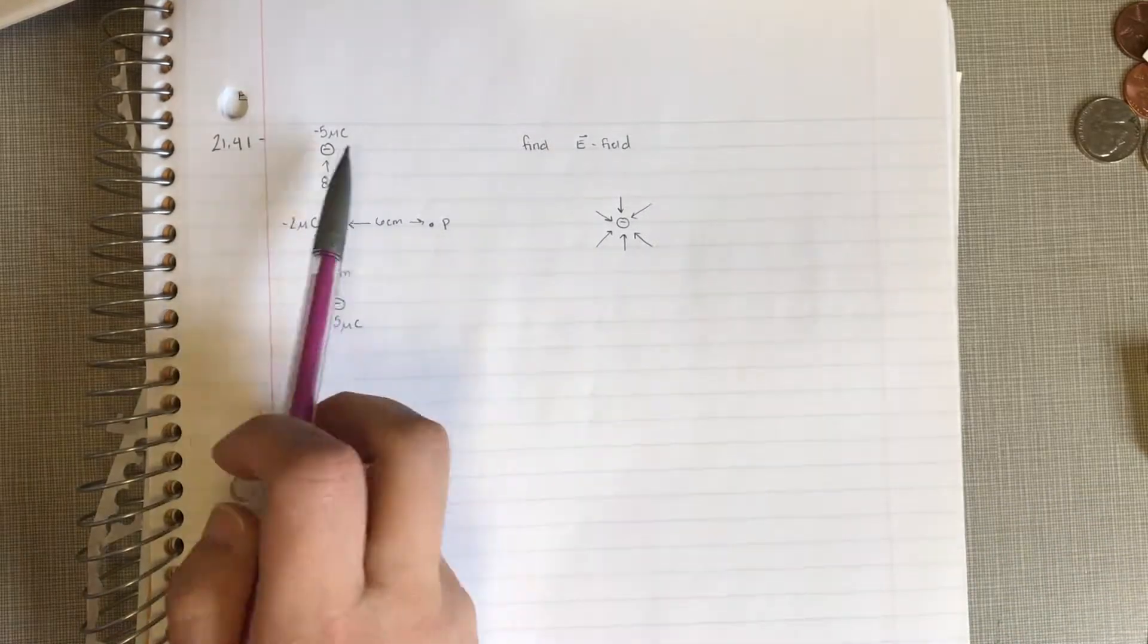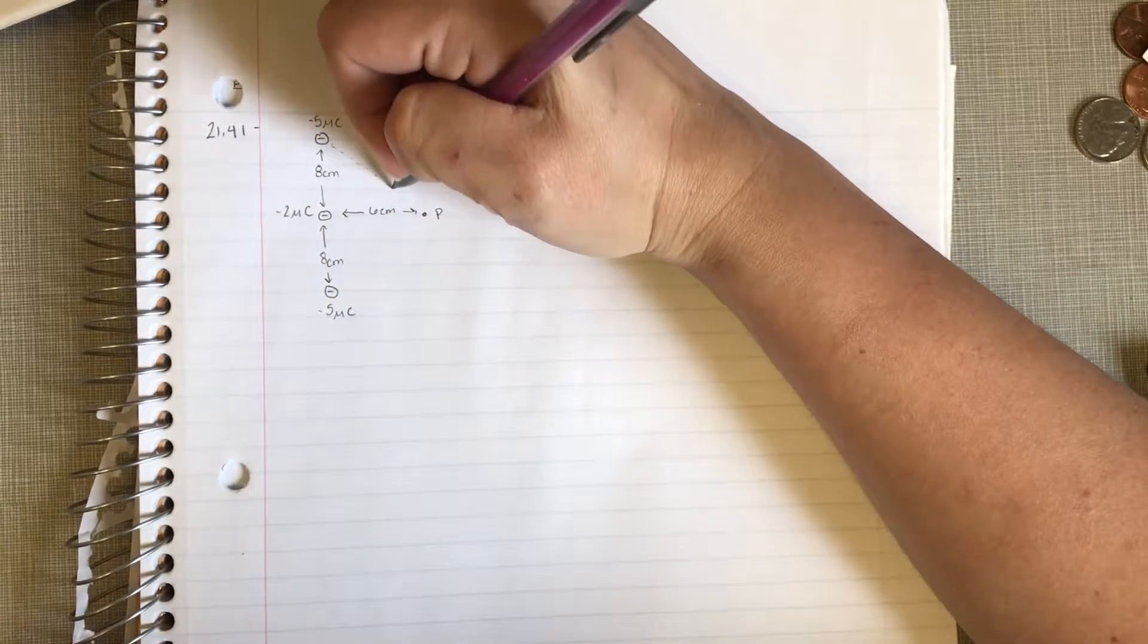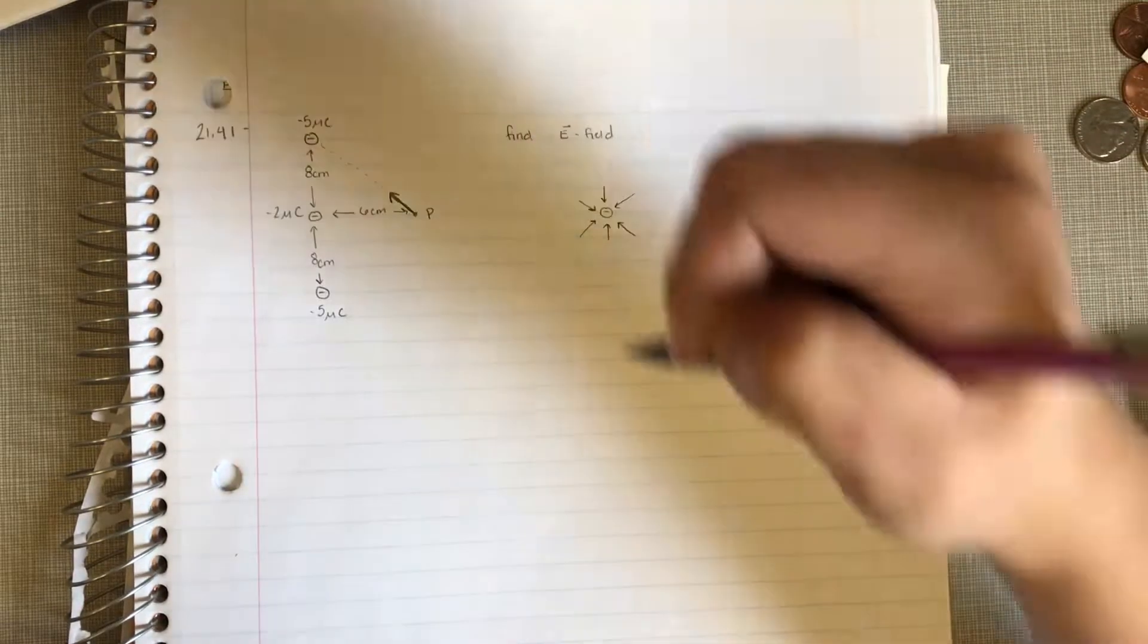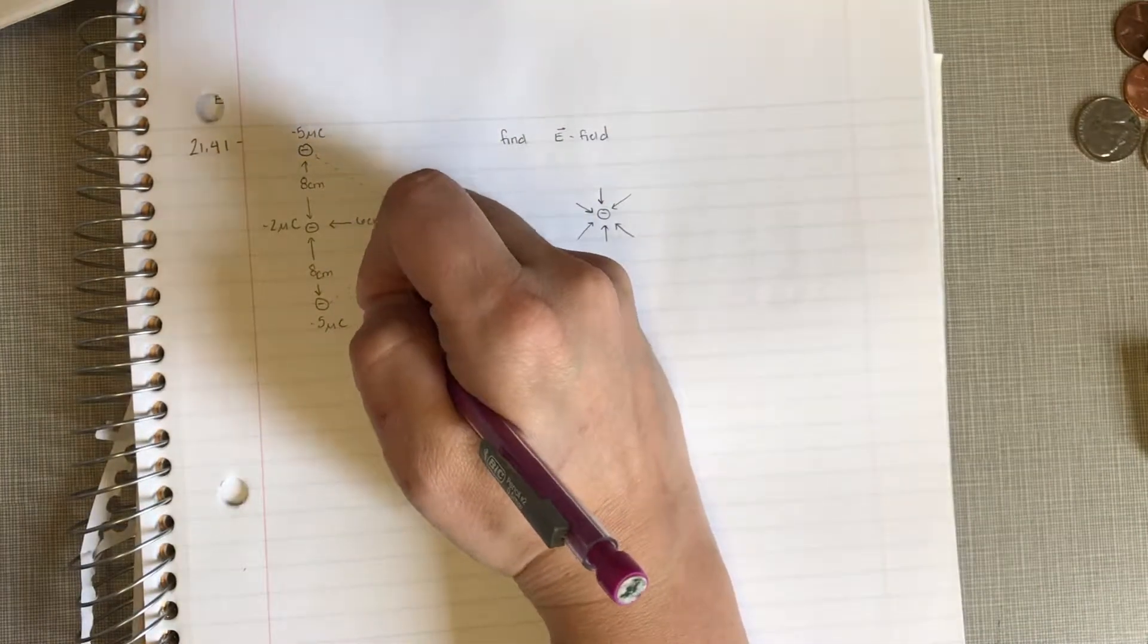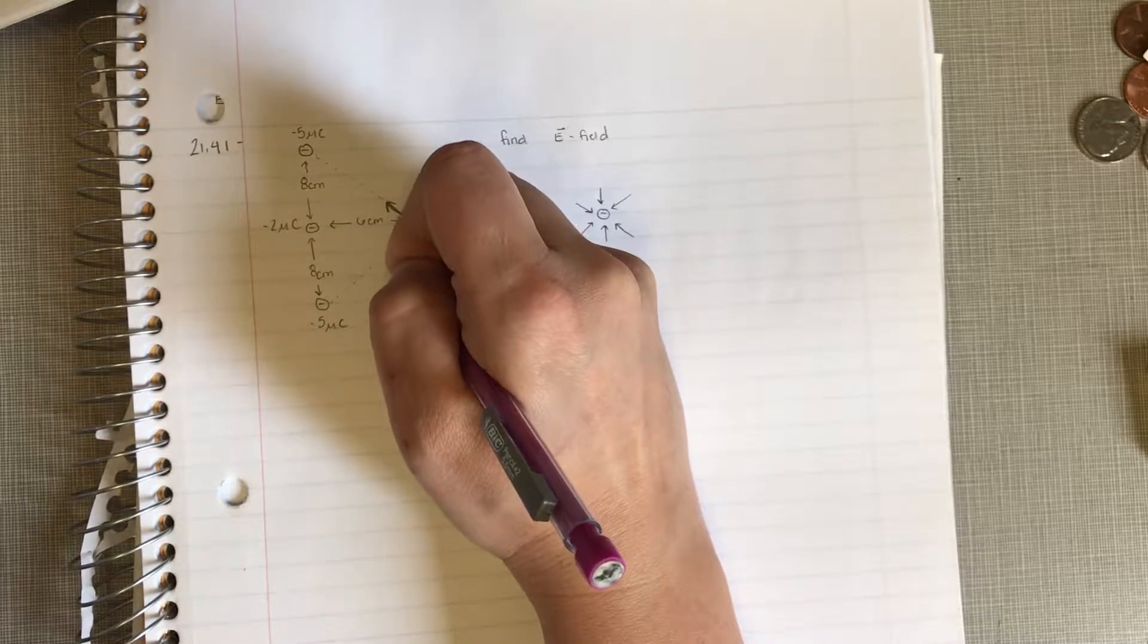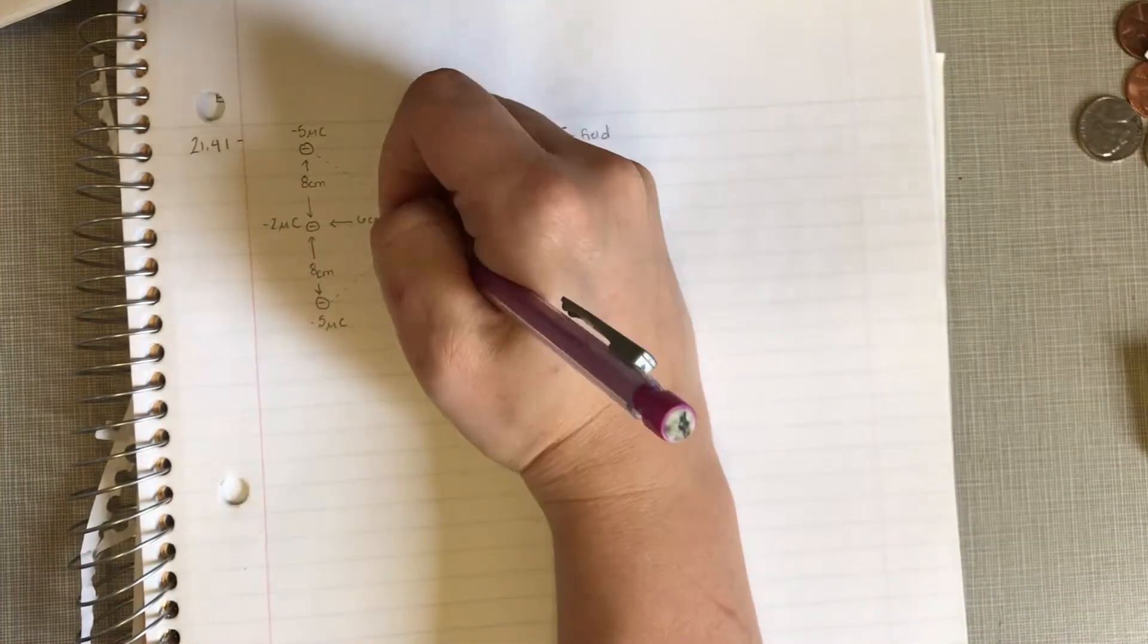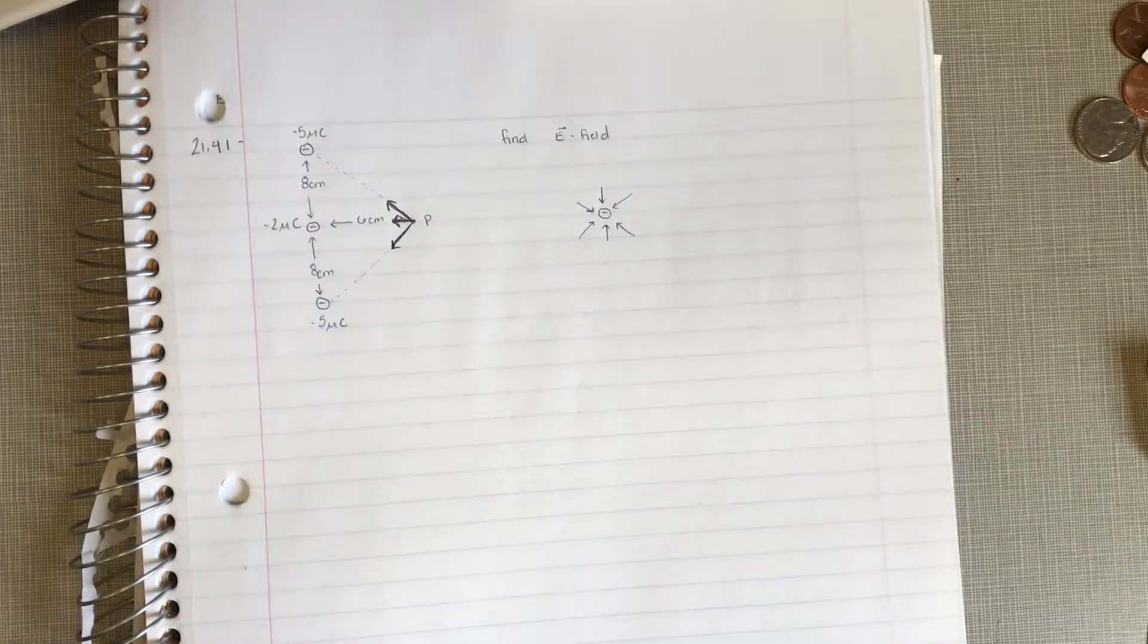So in this case, these negative point charges at point P, if we connect the two with a line, the electric field from that guy is going to point along that line towards the negative charge. Similarly for this guy, he's going to point towards that charge. And same for the negative two microcoulombs one. But I'm going to draw it smaller because I didn't draw this picture big enough. So those are the three electric fields that we're looking out for.